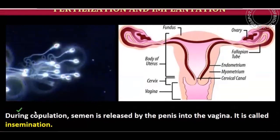During copulation, semen — the sperm and secretions of the accessory glands — is released inside the vagina. This process is known as insemination. Insemination is the process of release of semen into the vagina, after which the sperms travel along a path and reach the site of fertilization.